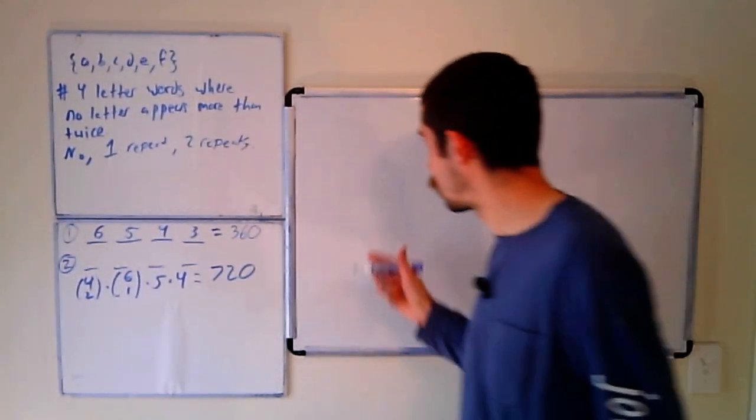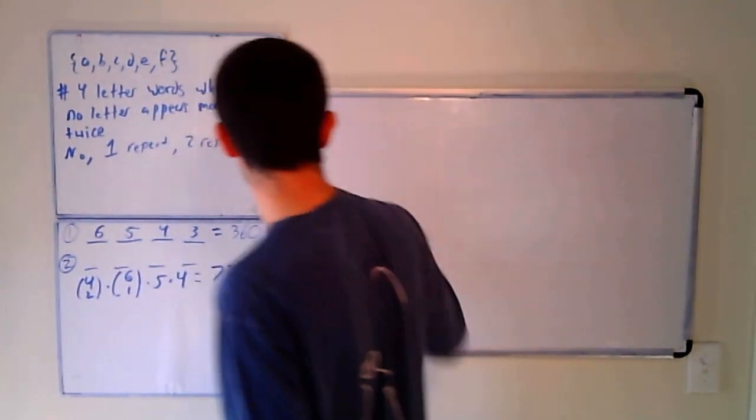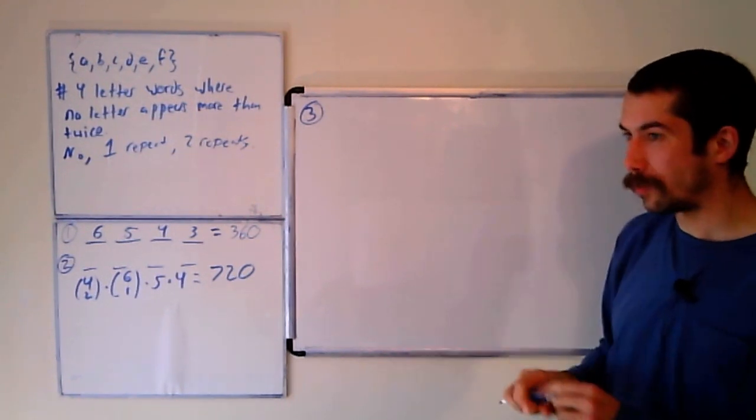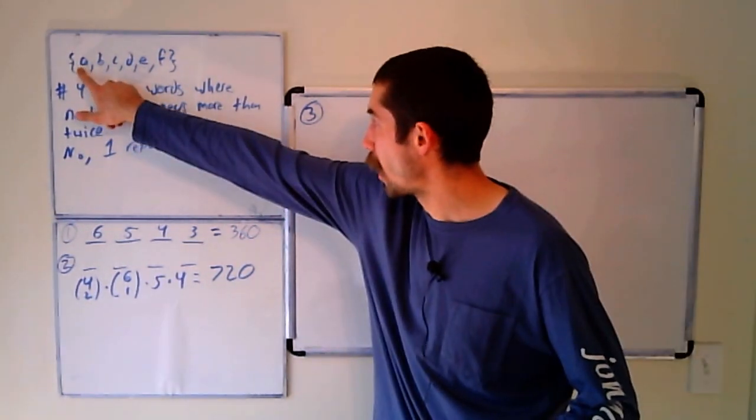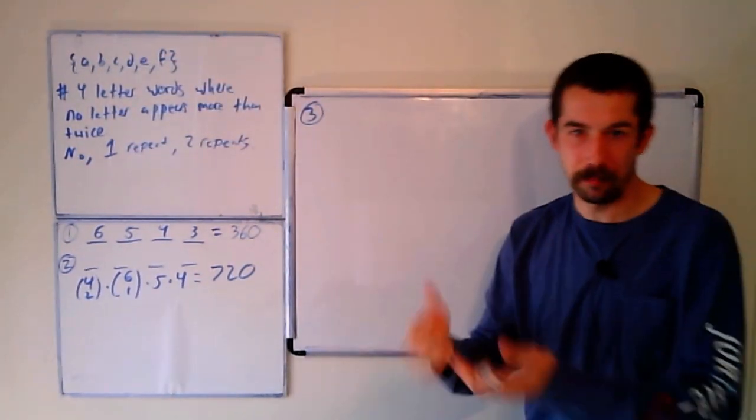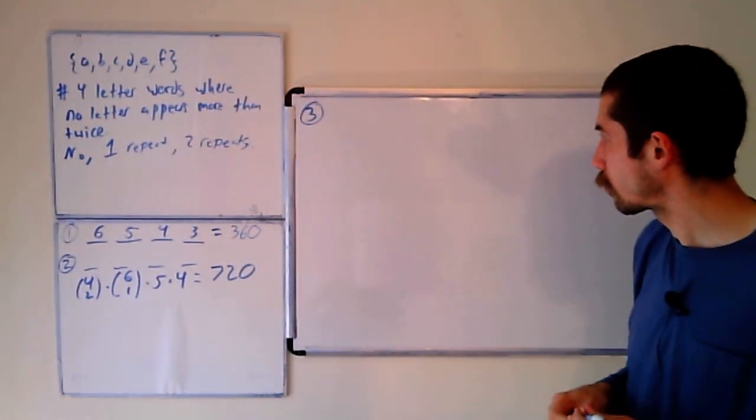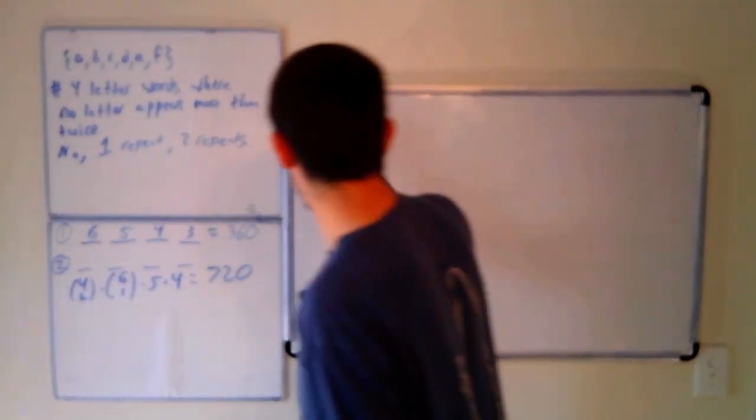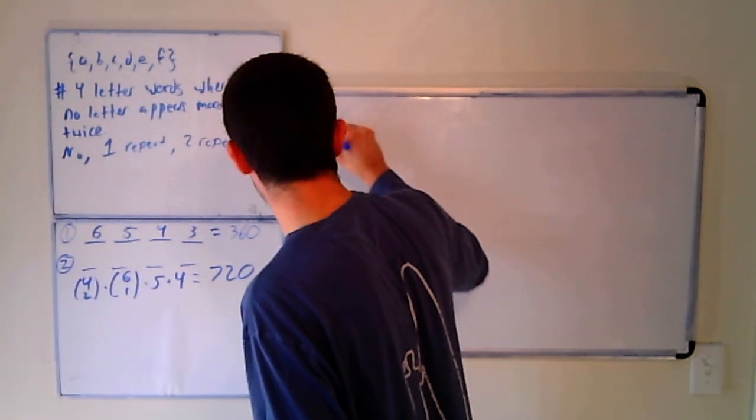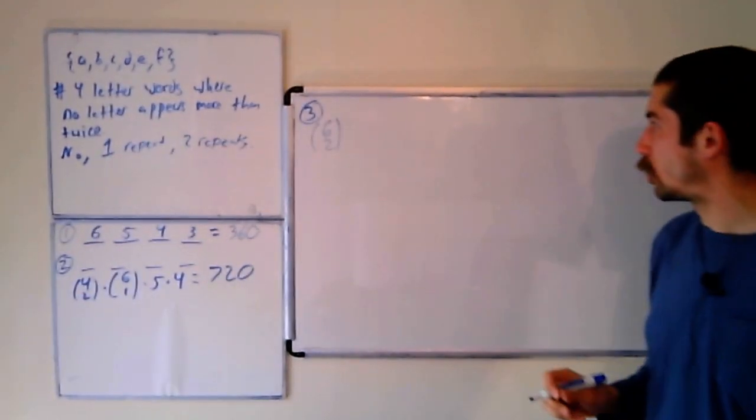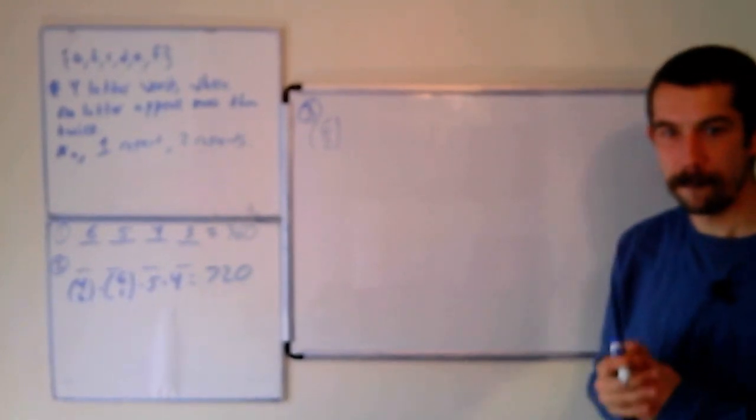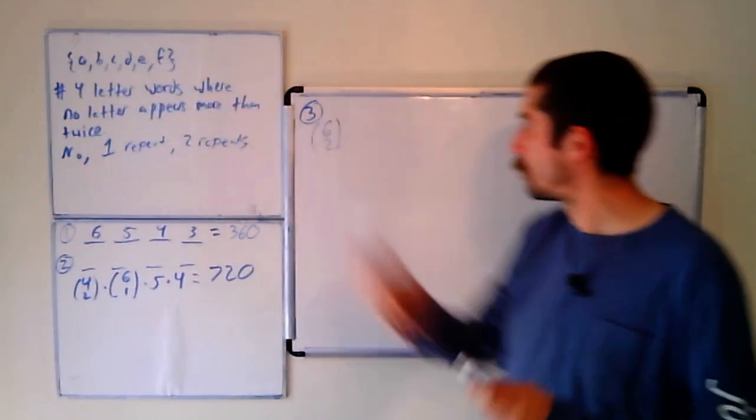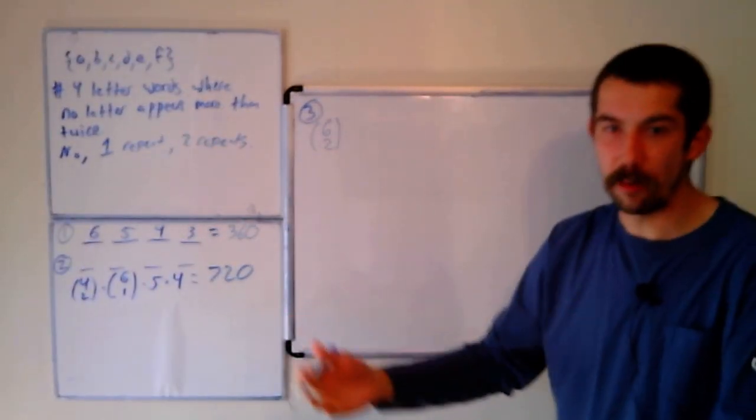And now this last case, two repeats. We're going to have maybe two appearances of A and two appearances of D, for instance, and we have to order them. So I guess we could start by let's pick the repeated letters. There's six letters to choose from, and we need to pick two of them. So that's six choose two. And so, like I said, maybe one was A and one was D. Either way, one of them is going to be higher alphabetically than the other.